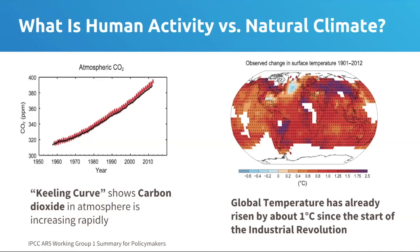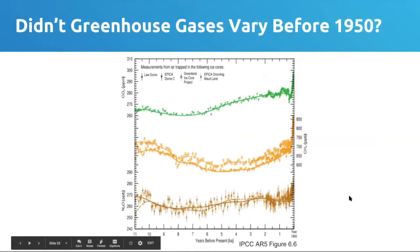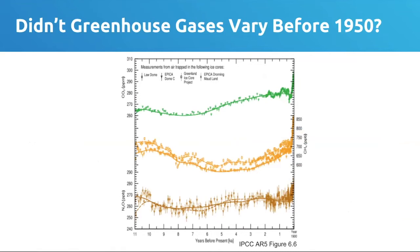These measurements are ongoing. The Keeling curve is a really nice visual because it's a profound driver of the climate system that you can couple to something like a map showing the global temperature change that's resulted. There are sometimes questions about changes in greenhouse gases before those measurements came into being in the 1950s.